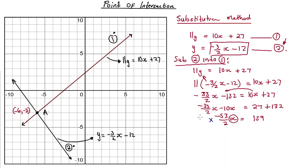To solve for x, I'm going to multiply both sides by negative 2 over 53 — the multiplicative inverse of the coefficient for x — or equivalently divide both sides by negative 53 over 2. This cancels, leaving x equals 159 multiplied by negative 2 over 53, giving us negative 6.